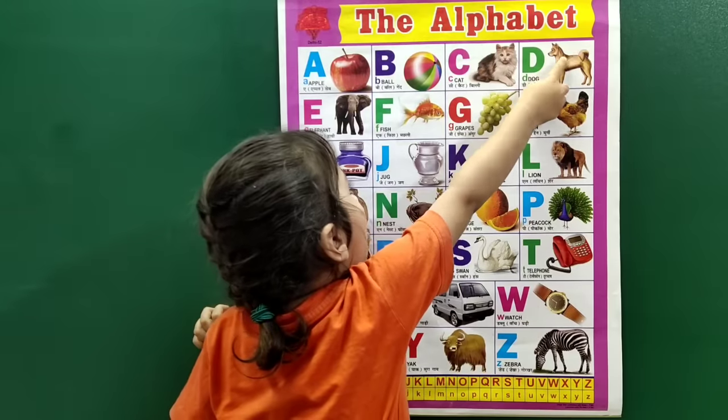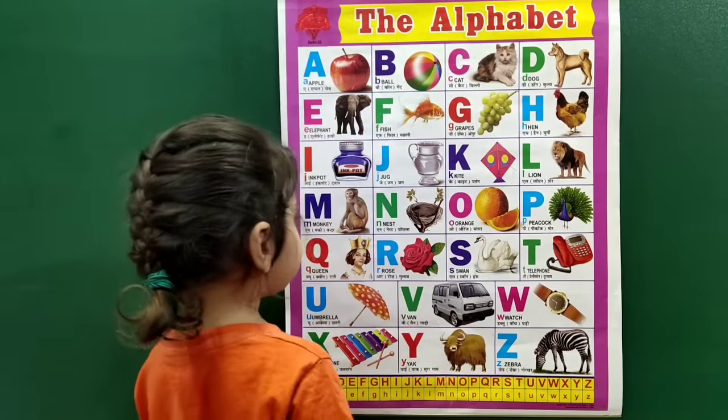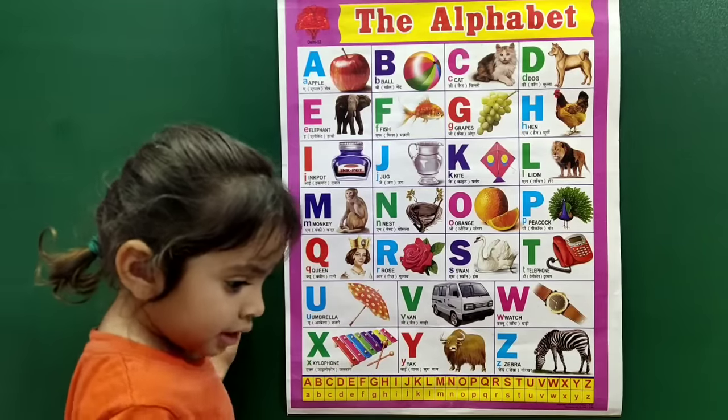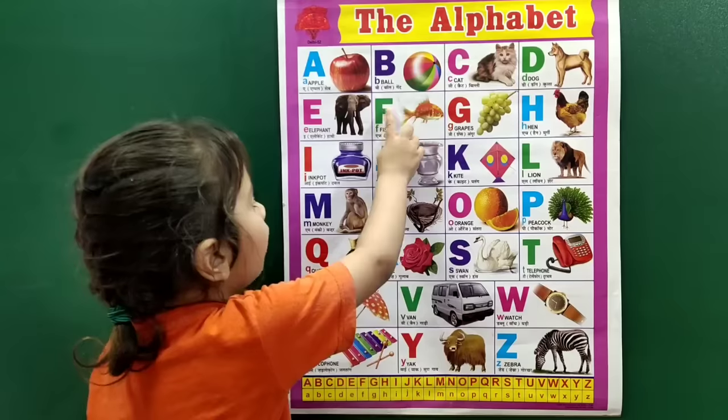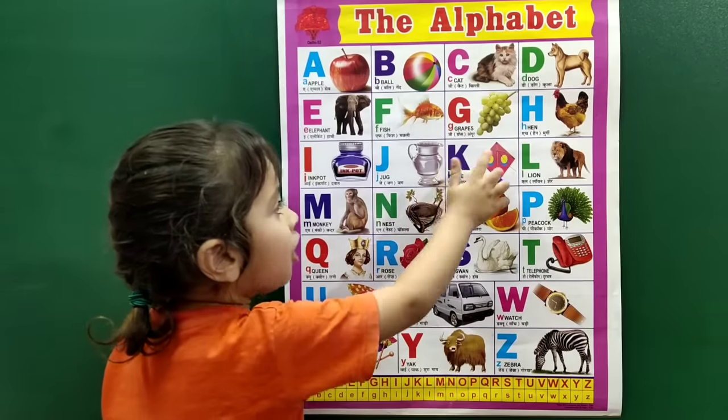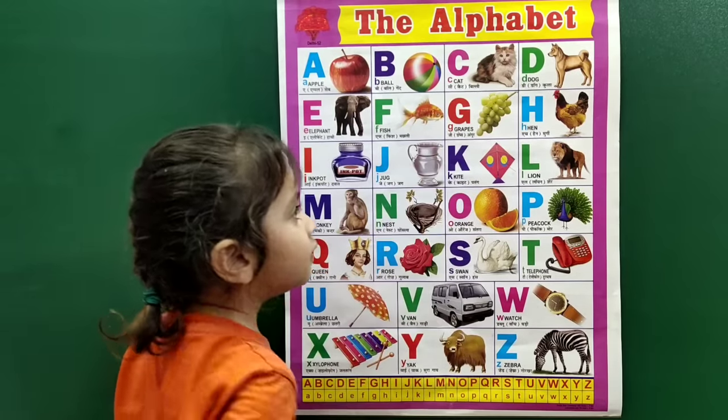D for dog, E for elephant, F for fish, G for grass.